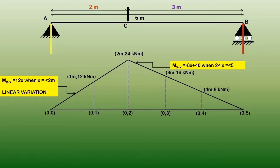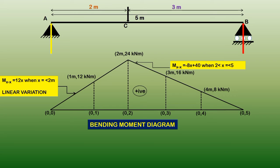For section C-B, the bending moment equation M = −8x + 40 (for 2 m ≤ x ≤ 5 m) shows linear variation. At x = 2 m, M = 24 kN·m; at x = 3 m, M = 16 kN·m; at x = 4 m, M = 8 kN·m; at x = 5 m, M = 0. The diagram is all positive, indicating sagging behavior throughout the beam.